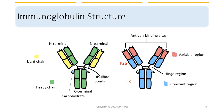Usually the N-terminal is where the binding happens to antigens — the variable regions. On the right-hand side, the red regions indicate variable regions, meaning they vary depending on the antigen that is binding. So antigen binding sites are located on the N-terminal. That's the protein breakdown characterization of the antibody structure.